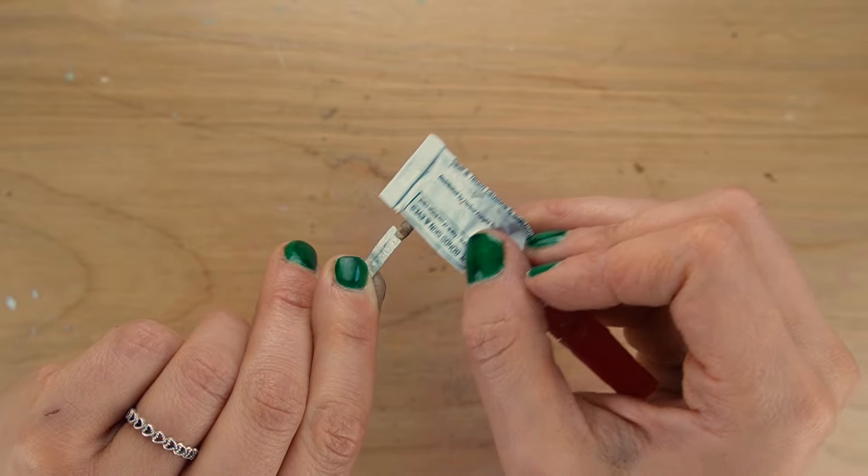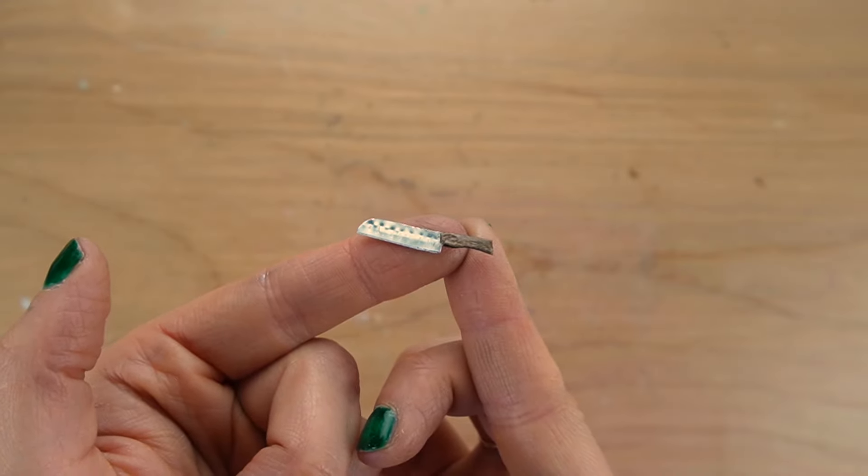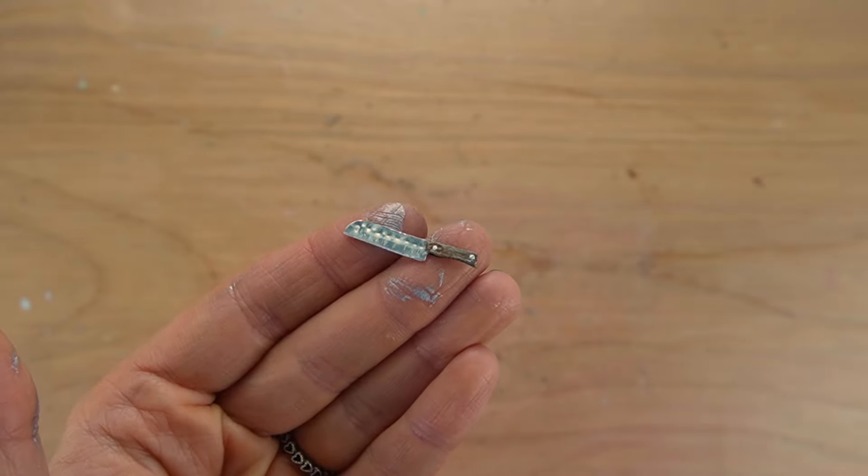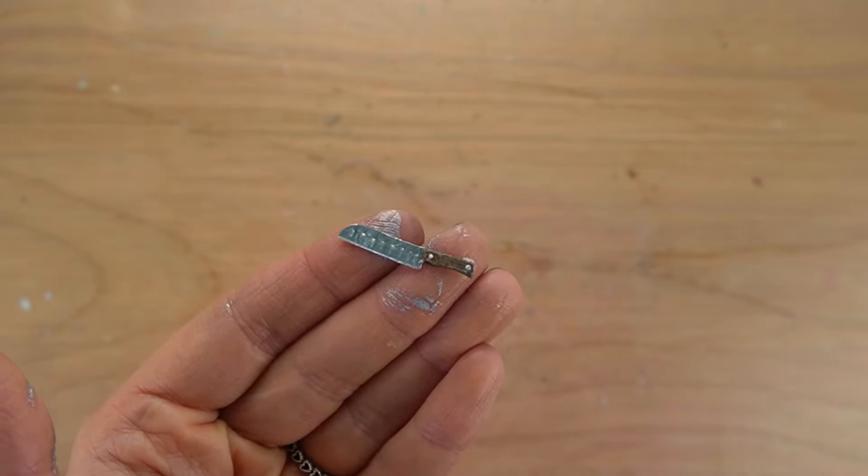Since I'm opting for the look of a wooden handle I'm keeping all of my cereal box as plain brown color without adding any color. You can play around by creating the look of plastic handles by painting prior to adding your rivets.